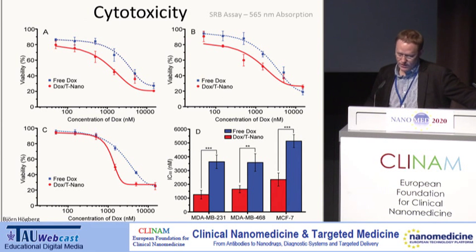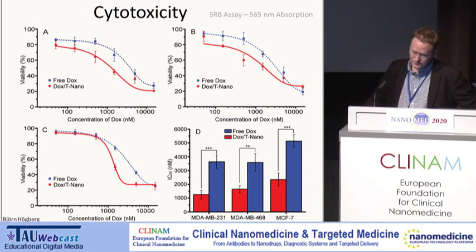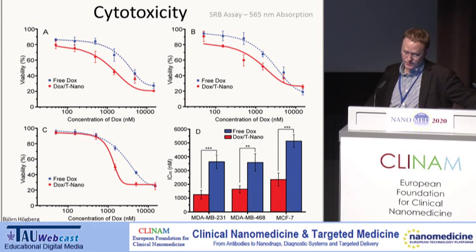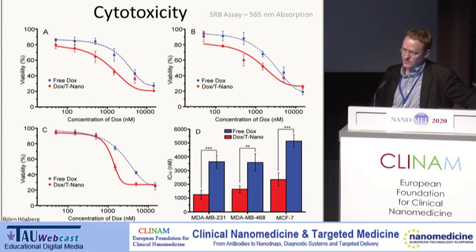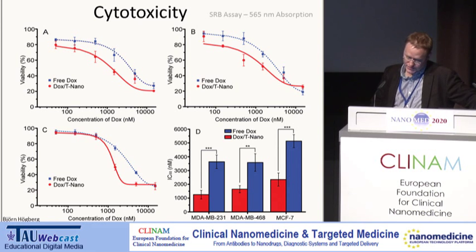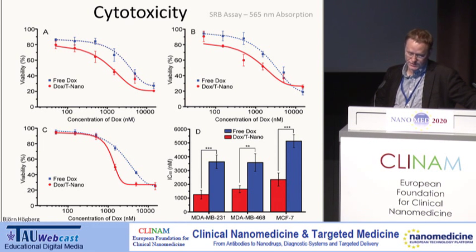Here is some data on cytotoxicity. Three different breast cancer cell lines were exposed to the dox nanotube system, and cell growth was inhibited more efficiently than using the free drug. In all cases, we get a significant decrease in the half-maximum inhibitory concentration when using the twisted nanotube.